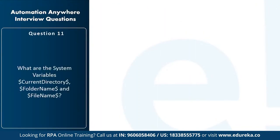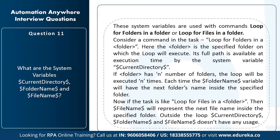Next question: what do the system variables Current Directory, Folder Name, and File Name mean? They are used with loop commands — Loop for Folders in a Folder or Loop for Files in a Folder. Current Directory provides the full path needed at execution time. Folder Name holds the name of each successive folder inside the specified folder each iteration. File Name holds the name of each successive file inside the specified folder. Outside loops these variables have limited usage, but inside loops they are very useful when designing large, complicated tasks.